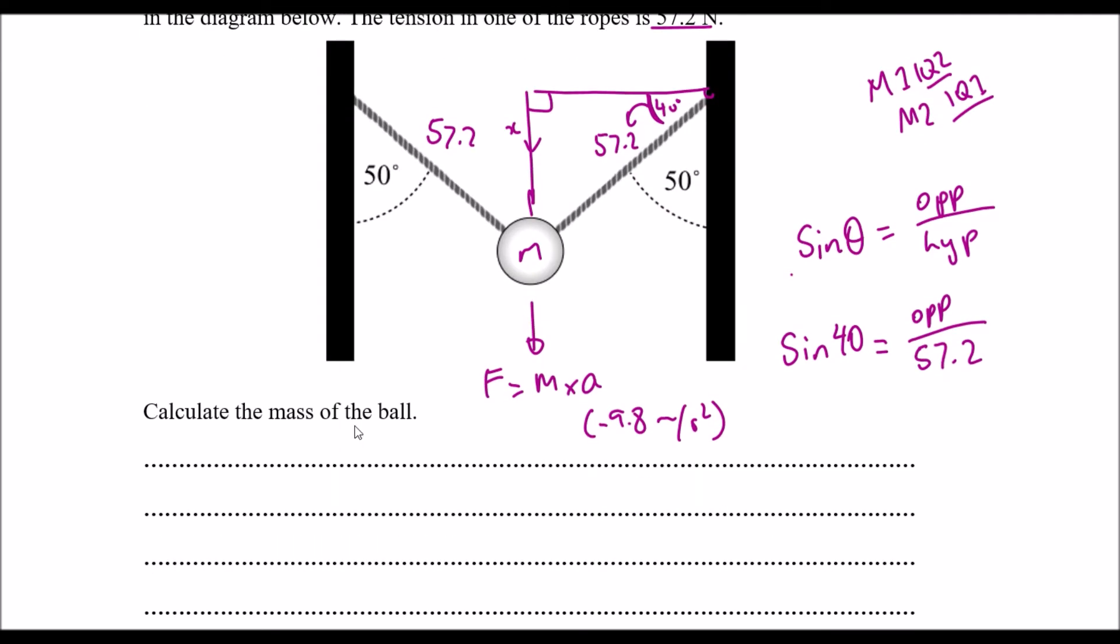So if I just rewrite my equation down here, it is the opposite, or we'll call it the x component, is sine 40 times 57.2. That gives us, let's plug it into the calculator, a force of 36.76 Newtons.